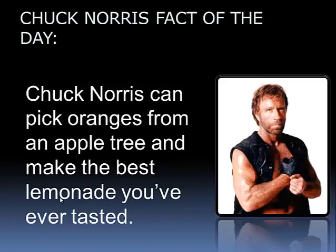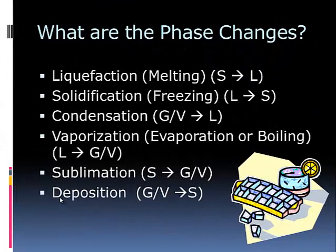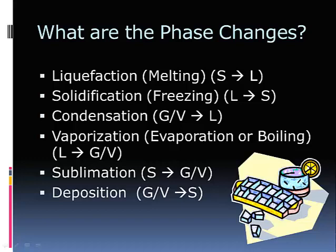There are six main phase changes: liquefaction, solidification, condensation, vaporization, sublimation, and deposition. The first, liquefaction — commonly called melting — is when you liquefy a solid by adding heat to convert it into the liquid phase. We add heat (+H) for this to occur. The opposite is solidification, commonly called freezing, where a liquid converts into a solid by removing heat (-H).